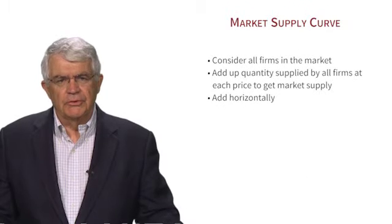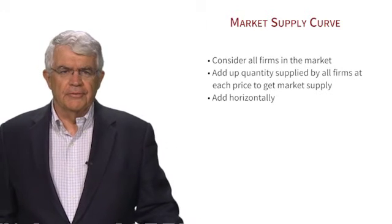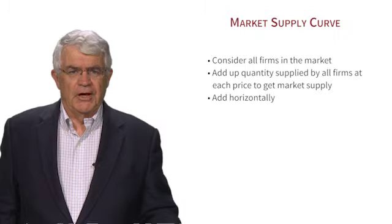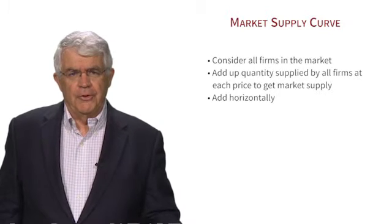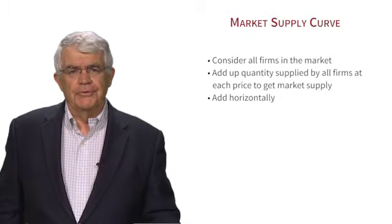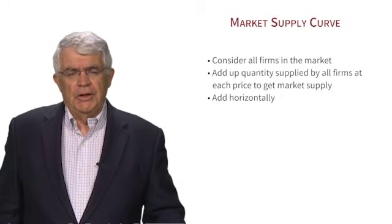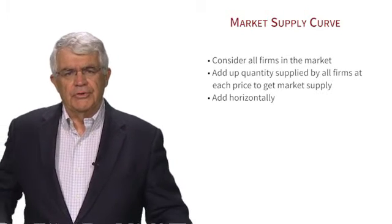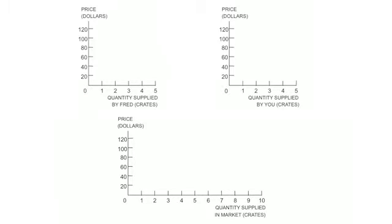The last thing is to derive the market supply curve, which considers all the firms in the market. Once we have the individual firm supply curve, we simply add up the quantity supplied by all firms at each price to get the market supply curve. This addition is horizontal across the diagram. We put in two individual supply curves — Fred's in the upper left and yours in the upper right — both derived from marginal costs.